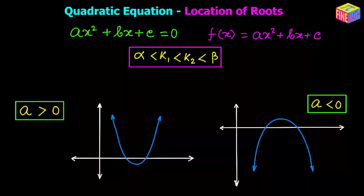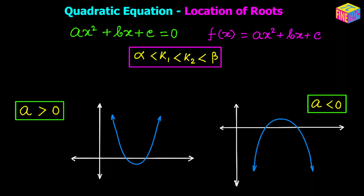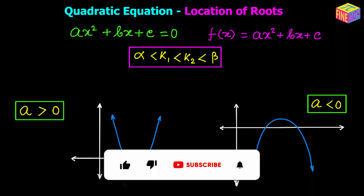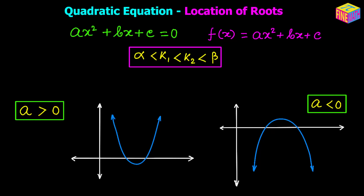Let's suppose we have a quadratic equation ax² + bx + c = 0. We can assume the quadratic function f is equal to ax² + bx + c. For this quadratic equation we have to find the necessary conditions for which two real numbers k1 and k2 will be between the two roots alpha and beta, assuming alpha is less than beta. Here I have two diagrams — one for when the leading coefficient is positive and the second for when the leading coefficient is negative. Let's plot the two real numbers k1 and k2 on the first diagram.